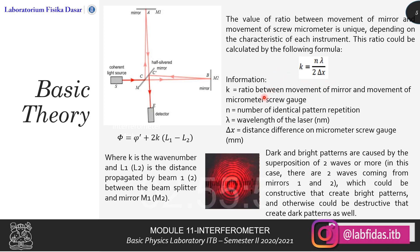K is the ratio between the movement of the mirror and the movement of the micrometer screw gauge, N is the number of identical pattern repetition, lambda is the wavelength of the laser in nanometers, and delta X is the distance difference on the micrometer screw gauge in millimeters.